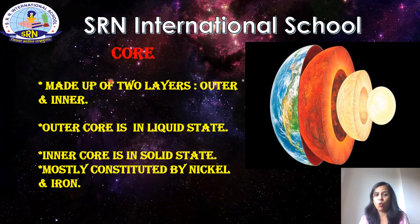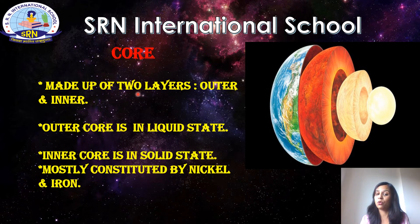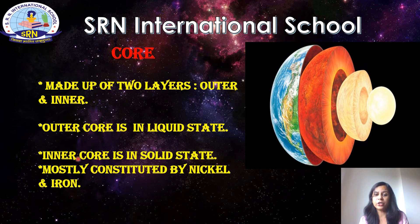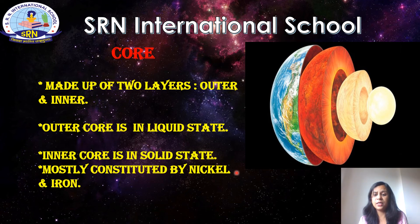Now let us come to the core, which is the innermost layer of the earth. The core has an average thickness of 3,500 kilometers and is subdivided into the outer core, which is in a liquid state, and the inner core, which is in a solid state. Both the outer and inner core are made up of elements with magnetic properties, mostly nickel and iron.